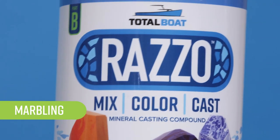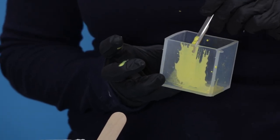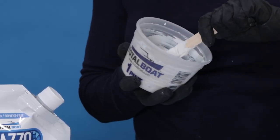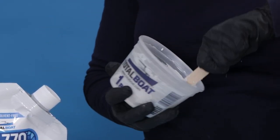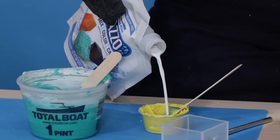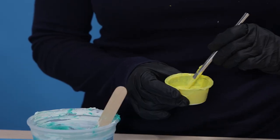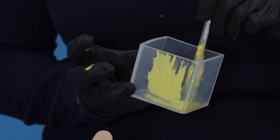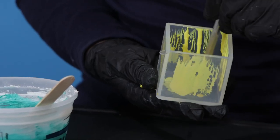Marbling: Easily create a marbling effect by brushing Razzo into your mold. After mixing a small amount of Part A and Part B, add additional Razzo liquid Part A until the mixture is thin enough that it drizzles from your brush. This thinned material will create the veins of your marble effect.